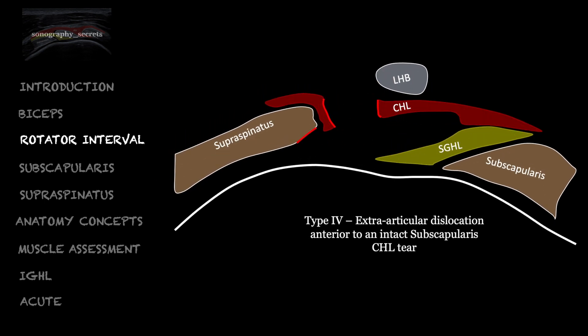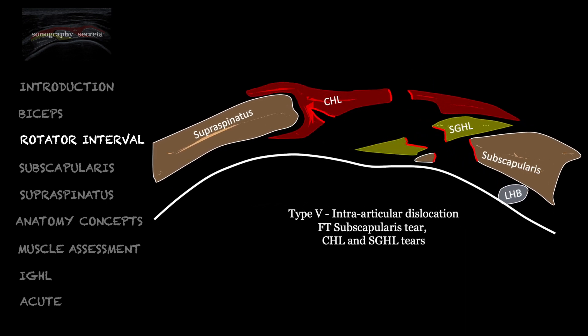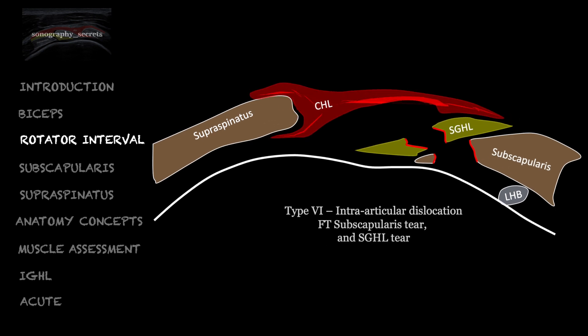Type four is extra-articular dislocation anterior to subscap due to a CHL tear. Type five is where there is intra-articular dislocation due to a full thickness tear of subscap and also a CHL and SGHL tear. Finally, type six is where we have intra-articular dislocation due to a full thickness subscap tear and a tear of the SGHL.